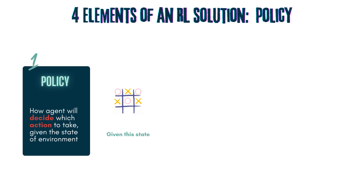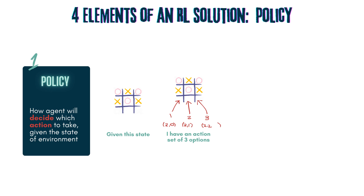Let's look at the policy. The policy is ultimately what the RL solution will produce — it is a set of guidelines the player follows to maximize his chances of winning. In this example, the player finds himself in a certain state with a set of three possible actions, referred to by the row and column number of the open position. For player X, he is in a bad spot and will likely lose, but actions 1 and 3 are somewhat better than action 2. If he chose action 2, he is guaranteed to lose at the next step.